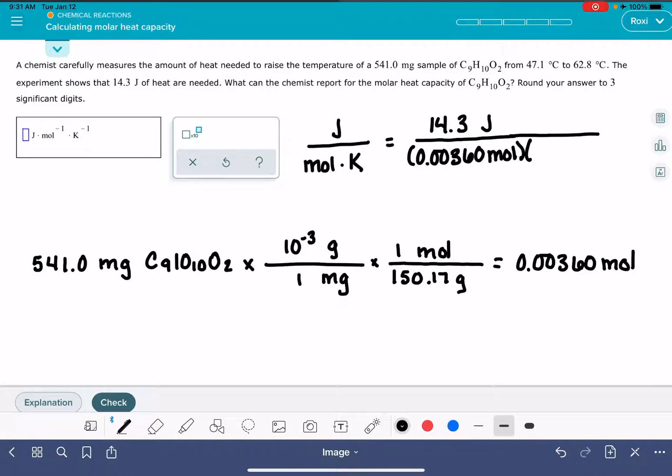And then the last piece that we need is the temperature. This is specifically referring to the change in temperature. And because, as I've talked about before, when we're talking about delta T, delta T in units of degrees C is going to be exactly the same as delta T in units of Kelvin because the temperature scales are equivalent to each other. The increments are equivalent to each other. So we can get the temperature change, the difference in temperature right here. 62.8 minus 47.1 is 15.7. 15.7 Kelvin or 15.7 degrees C. It doesn't make a difference.